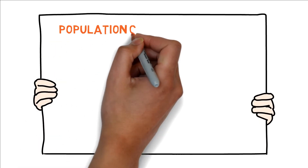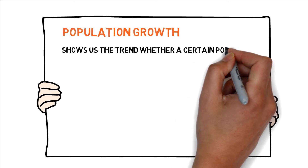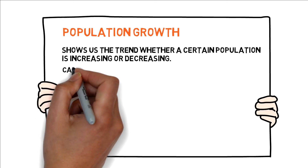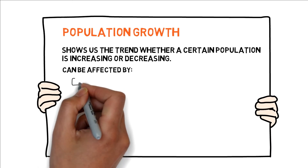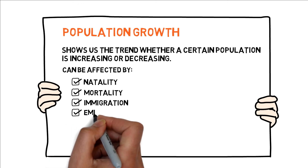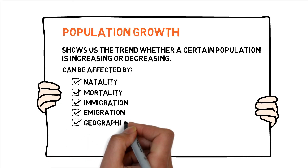We also have the term population growth. A population growth shows us the trend whether a certain population is increasing or decreasing. Population growth can be affected by a lot of factors. It can be affected by natality or birth, mortality or death, immigration which is moving into an area, emigration or moving from an area, and geographical space and availability of resources.